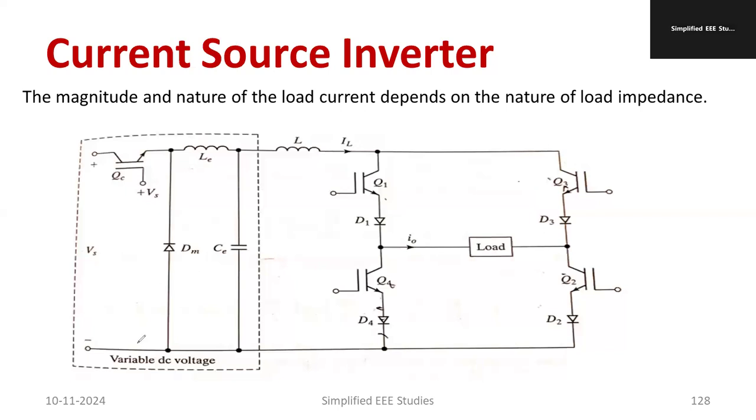As you can see, first of all, we need to produce the constant current. The supply voltage with series inductor, you can see. At the input side, we have one switch available. Then there is one LC circuit. Then there is one free-wheeling diode which is available here. This is actually the production of current.